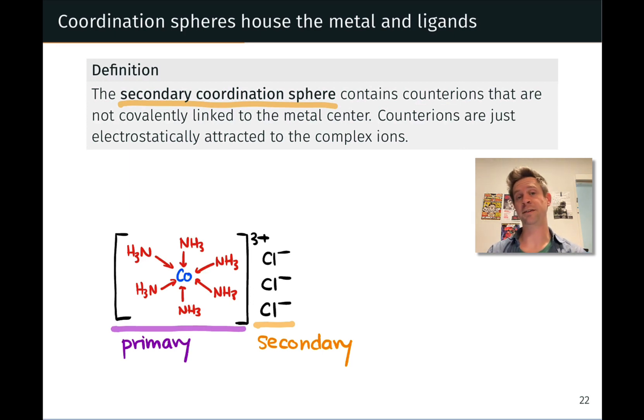The secondary coordination sphere can be disrupted by solvation, by dissolving a solid coordination compound in solution. But unless a solvent comes in as a ligand and displaces one of the ligands, the primary coordination sphere is not disrupted when a coordination compound dissolves in water.